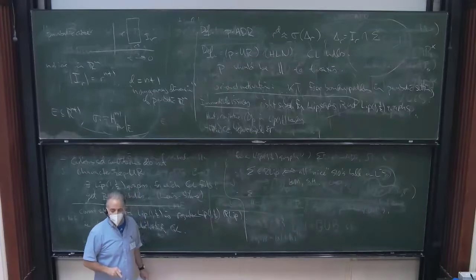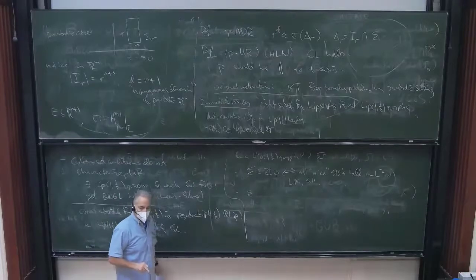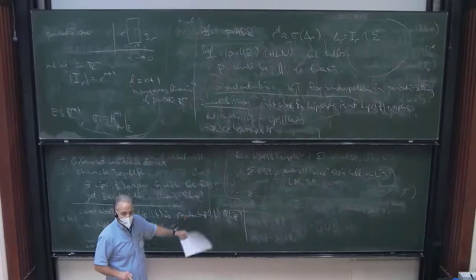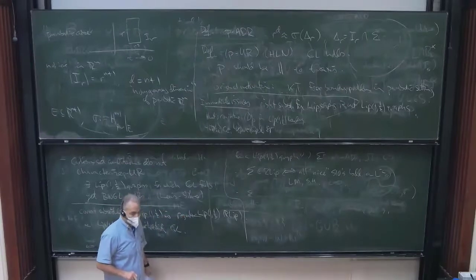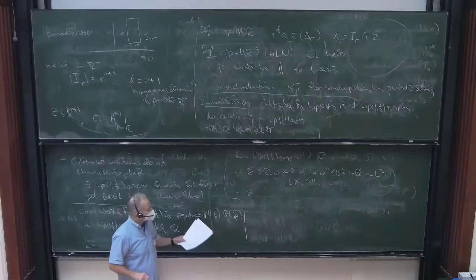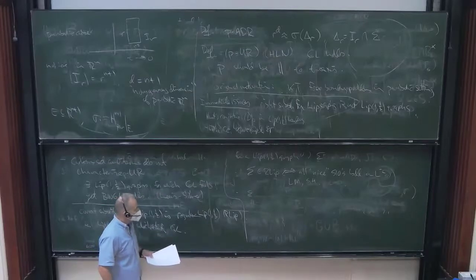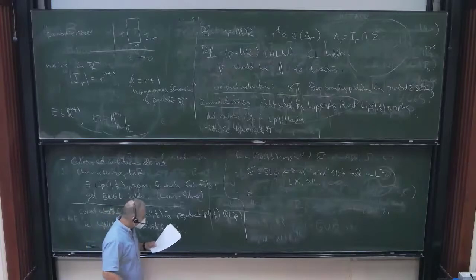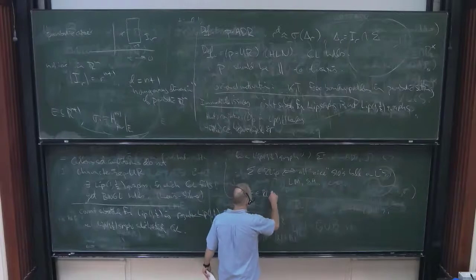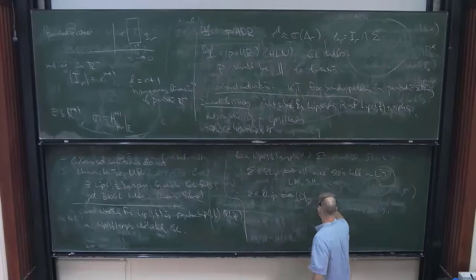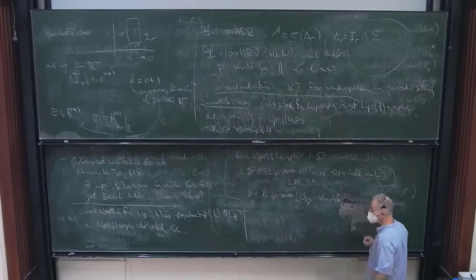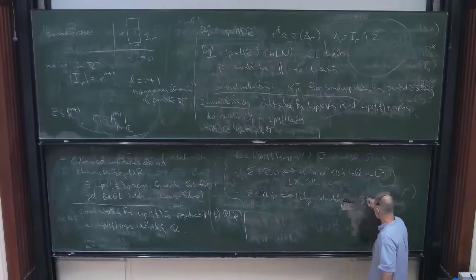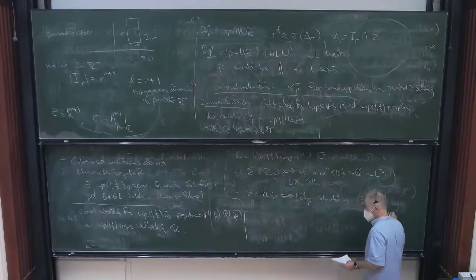But we know these are the right ones now because it turns out that for a Lip(1,1/2) graph, we have that, let's call it sigma, sigma is R-Lip, if and only if all nice parabolic singular integrals, SIOs, are bounded on L2. This is partly due to Lewis and Murray, and partly due to me. Second thing is that sigma is R-Lip if and only if DP is solvable in a domain above the graph. And this is a recent result. This is, in fact, this was the topic of my mini course last week. This is joint work with Simon Bortz, Chema Martel, Kaj Nyström.